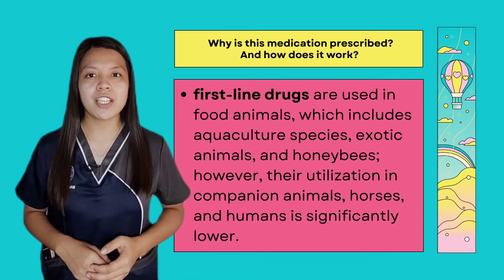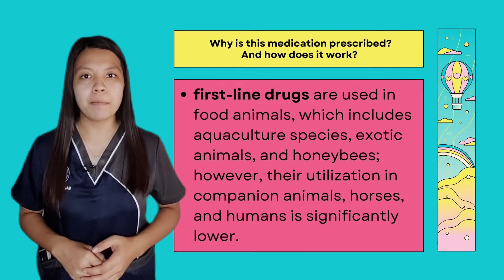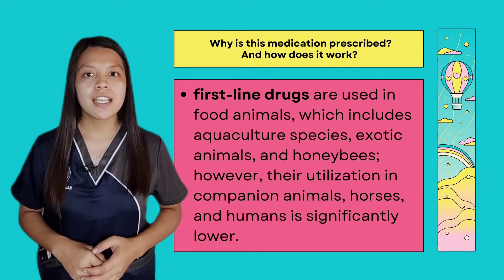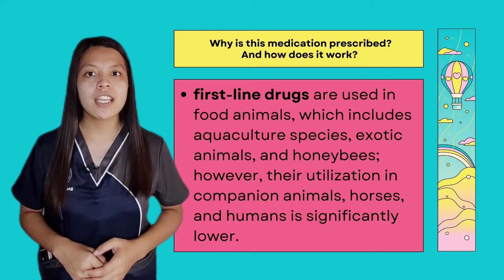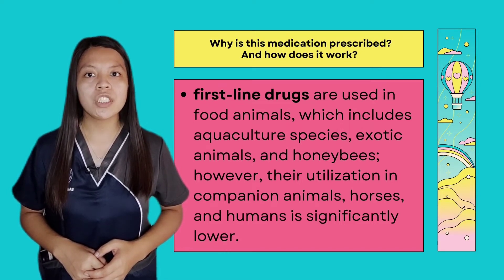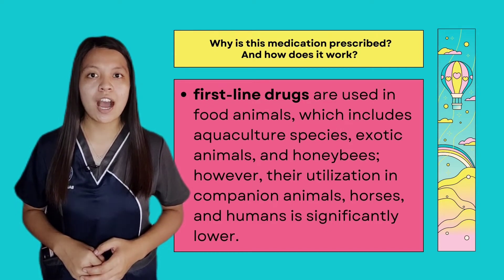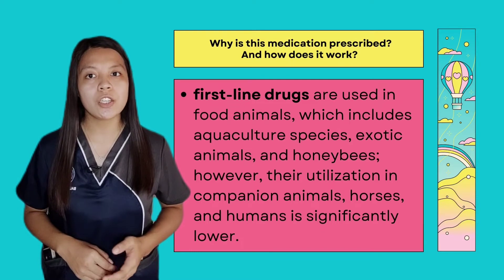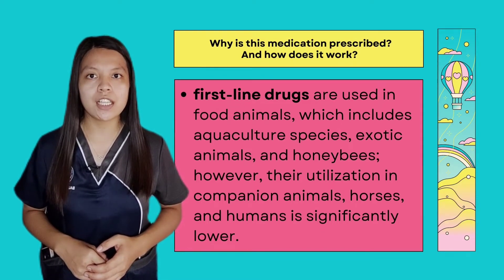Why is this medication prescribed, and how does it work? In the field of veterinary medicine, the class of antibiotics known as tetracycline has the highest rate of application. They are considered the first-line drugs used in food animals, which includes aquaculture species, exotic animals, and honeybees. However, their utilization in companion animals, horses, and humans is significantly lower.